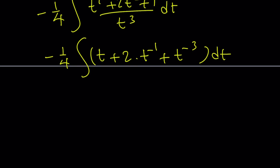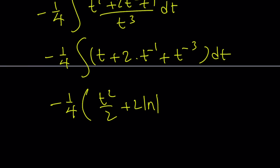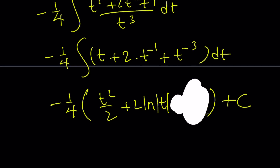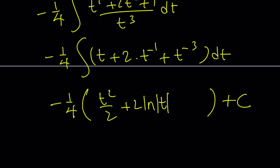Integrating term by term: if you integrate t you get t²/2; 2t⁻¹ gives 2 ln|t|; and t⁻³ gives t⁻²/(-2), which we can write as -½ t⁻². So it's going to look like -½ t⁻².